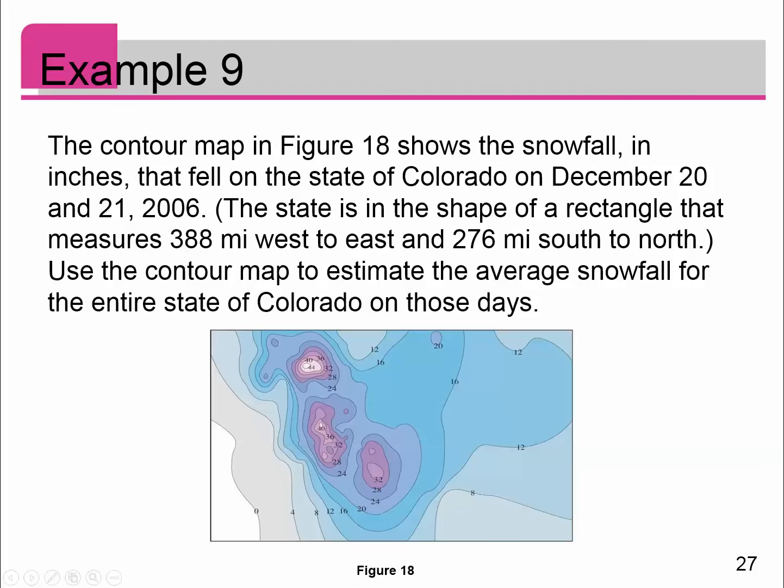Another way to think of it is like this example here. I want to show you an example of how we might take a contour map like this and use it to find what the average is of this function across this rectangle. You've got a full rectangle here in figure 18. This represents the amount of snowfall that fell in the state of Colorado on December 20th and 21st in 2006. The shape of Colorado is essentially a rectangle, 388 miles west to east and 276 miles south to north.